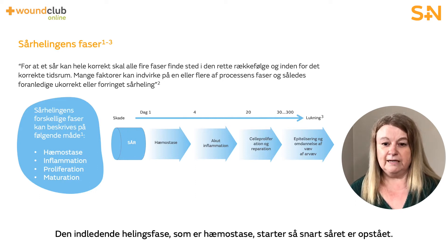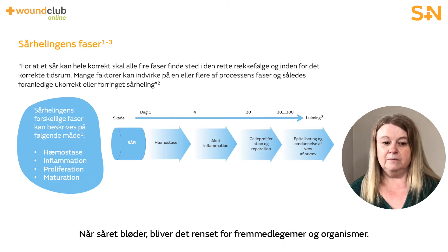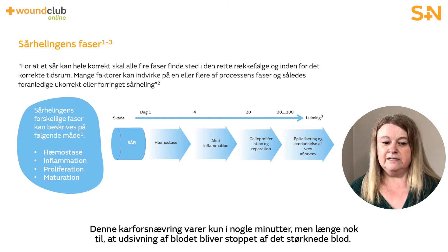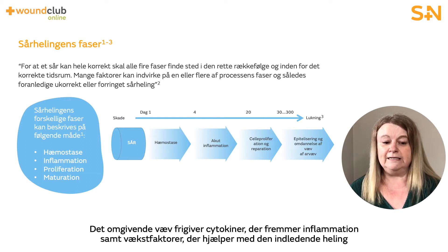The first phase of wound healing is haemostasis, which begins immediately after the wound occurs. Bleeding has the immediate effect of cleansing the wound as the blood washes away foreign bodies and organisms. To prevent further bleeding, vascular constriction and fibrin clot formation occurs. This vasoconstriction lasts for only a few minutes, just long enough for the leaks to be sealed by blood clots. The surrounding wound tissue releases pro-inflammatory cytokines and growth factors, which help with the first stages of healing.